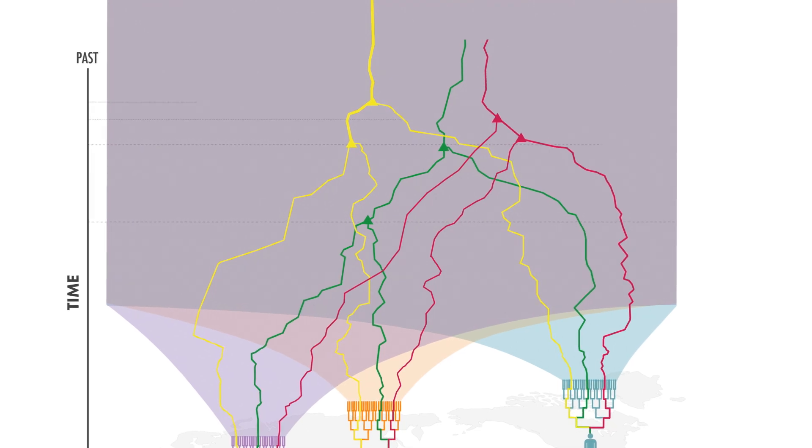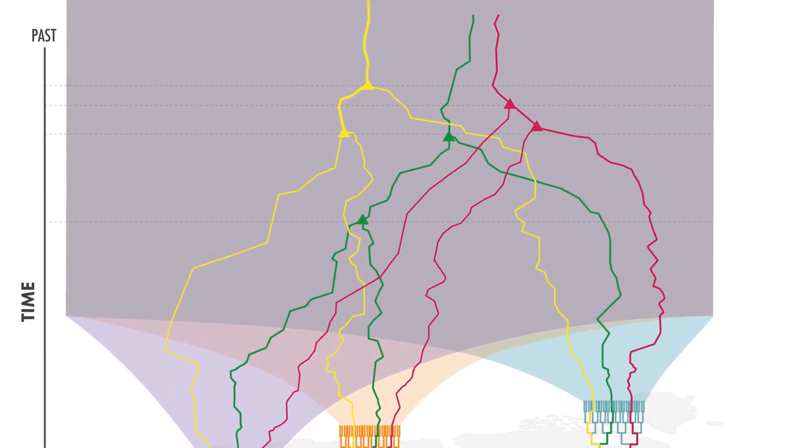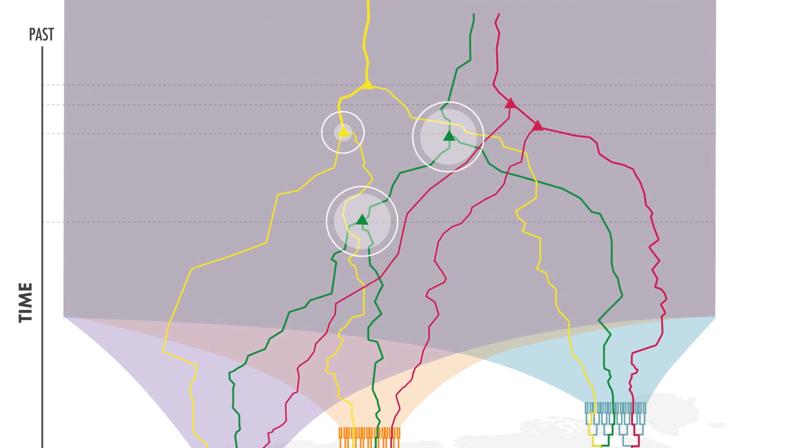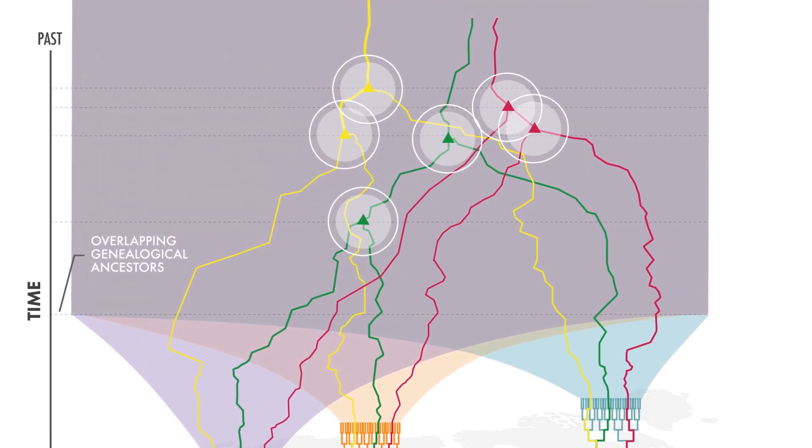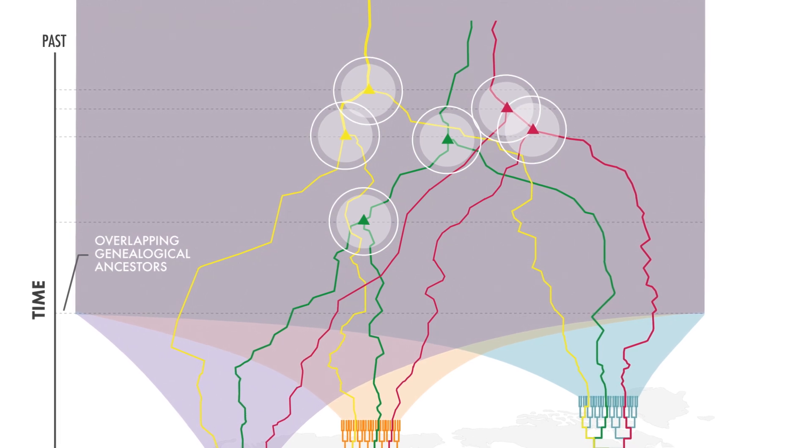As we trace these lines of genetic ancestry back in time, these lines meet in common ancestor events that are further back in the past than the overlap in pedigree or genealogical ancestry that occurs first.